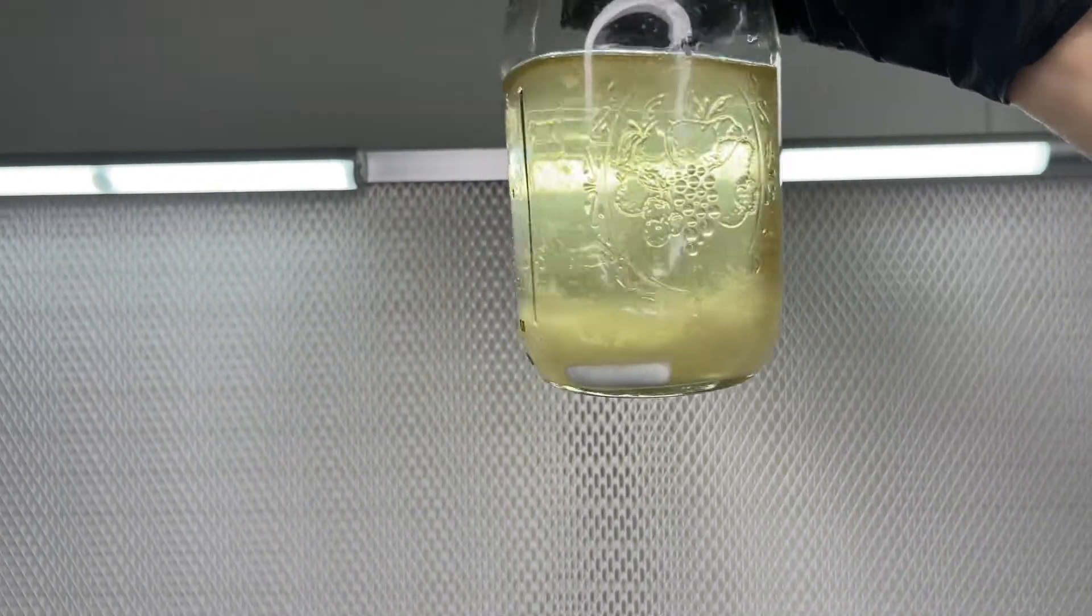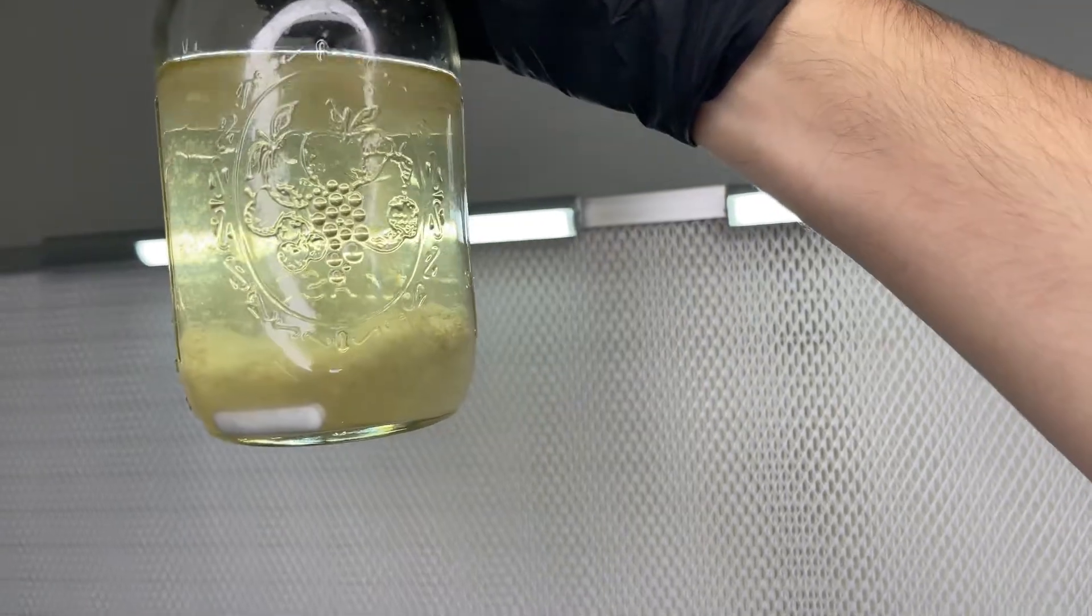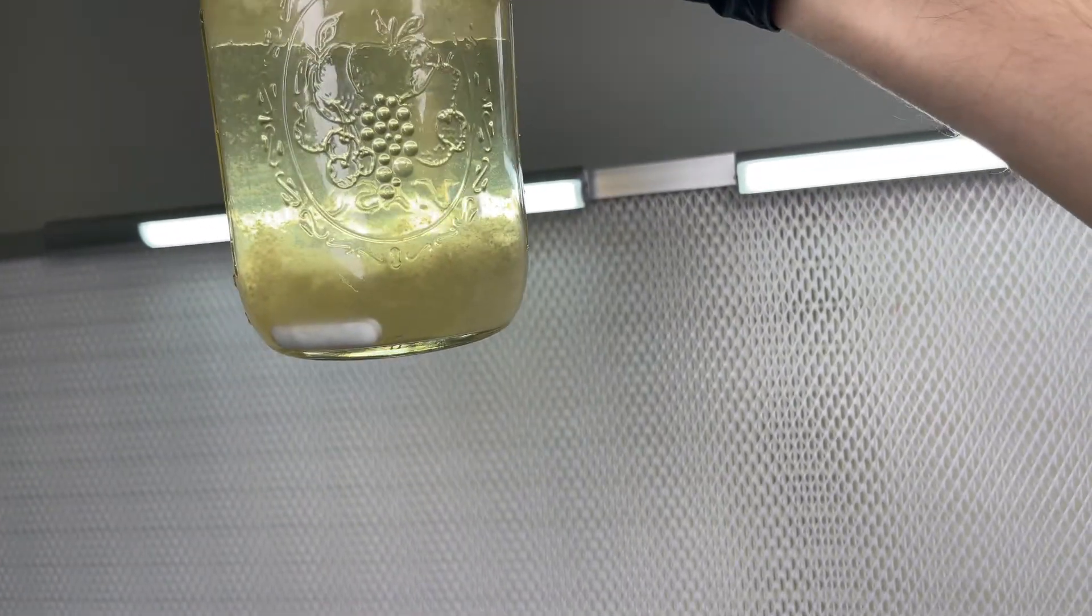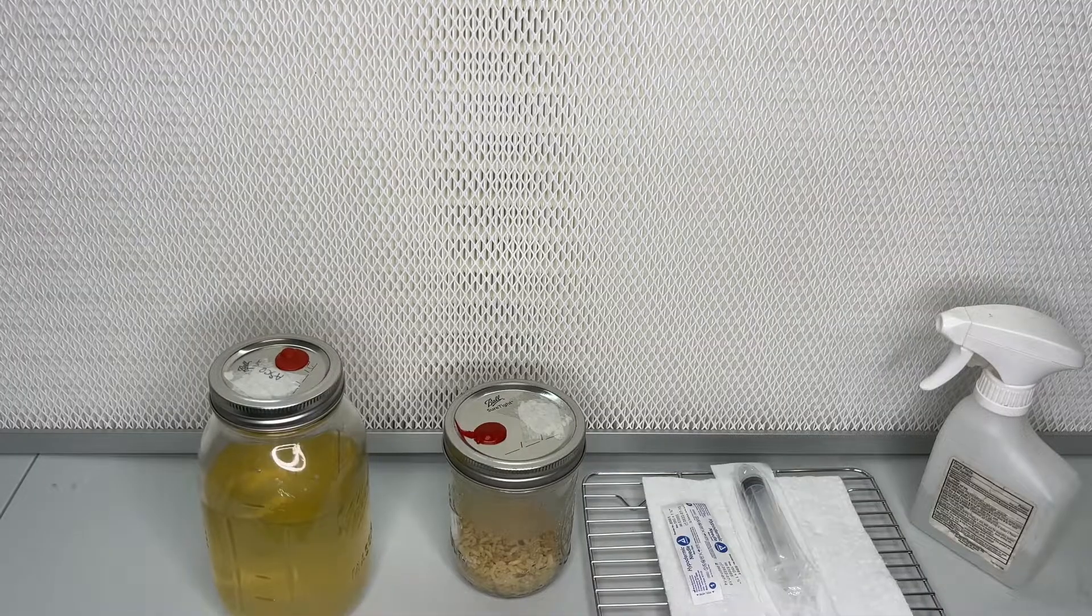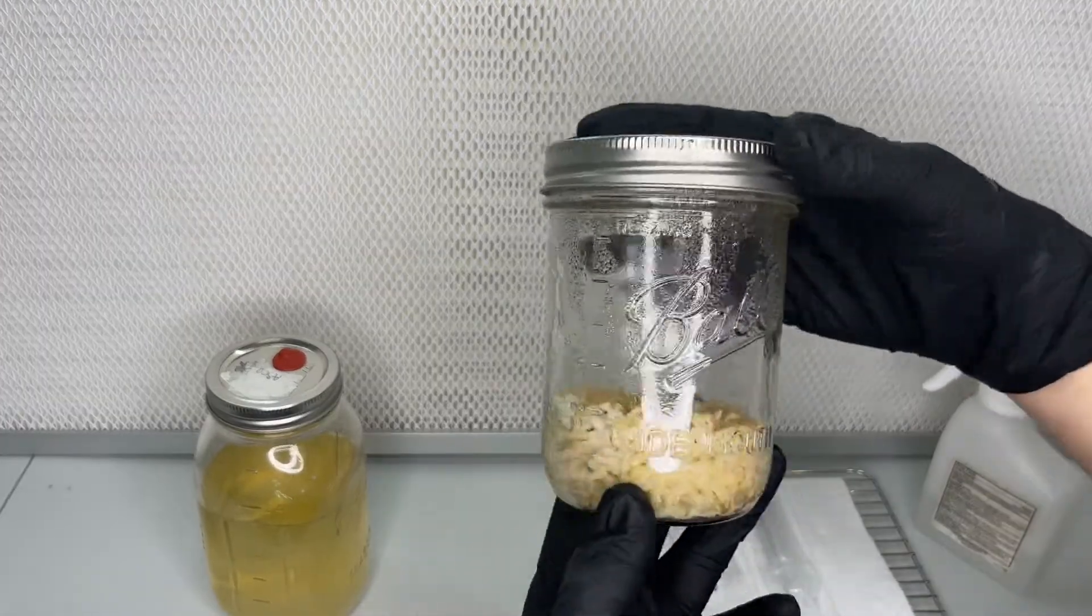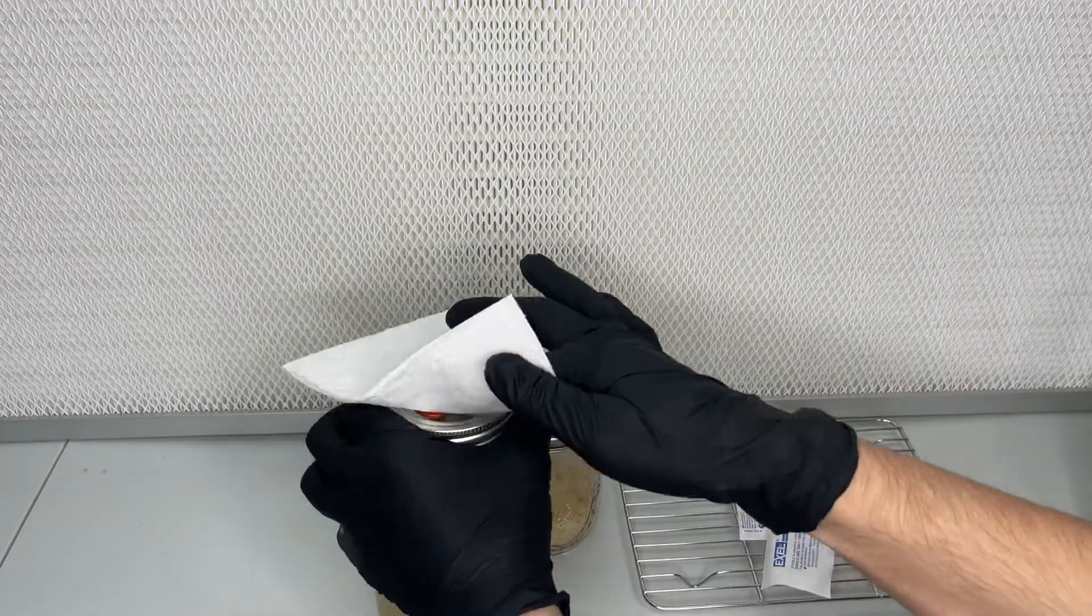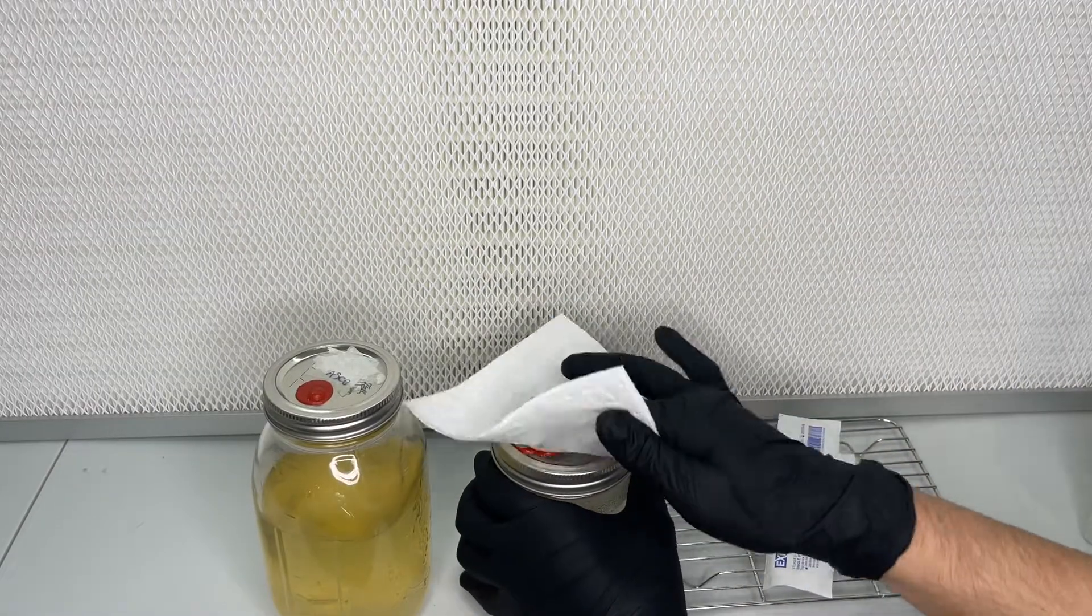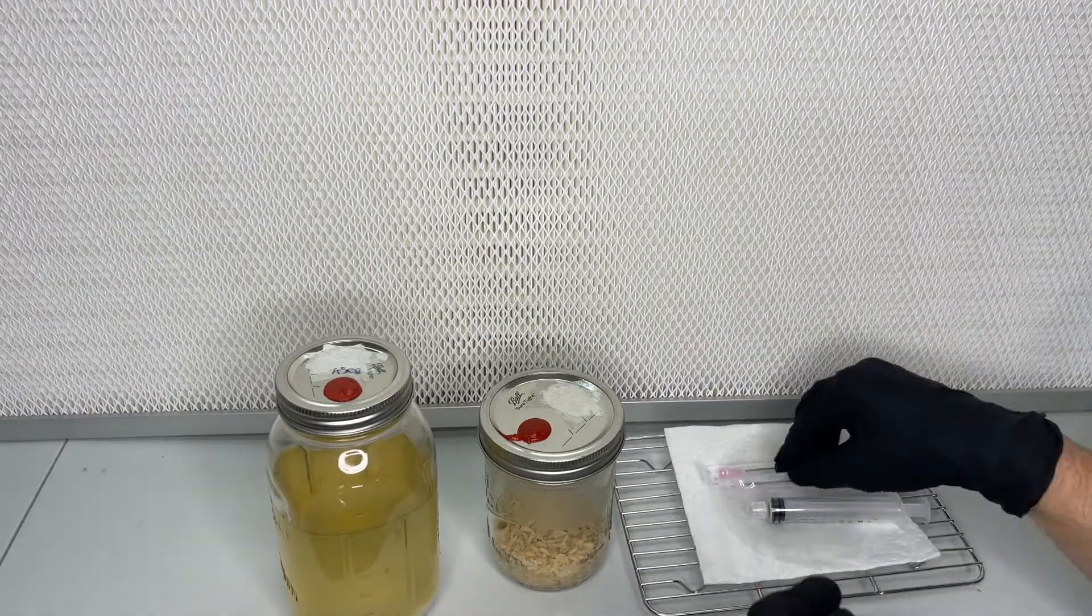At this point, I use a sterile syringe to suck up some of the mycelium and inject it into a sterilized jar of rice substrate. By doing this, I'm testing the fruiting viability of the chosen multi-ascospore isolate. The remaining master liquid culture is stored in the refrigerator until the results of the viability test are known.